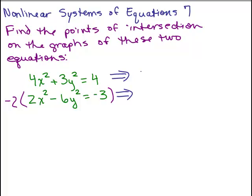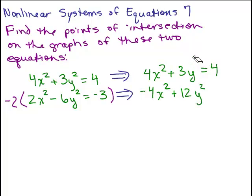I'm not going to multiply the top equation, so I'll just write it over again: 4x-squared plus 3y-squared equals 4. For the bottom equation, I've got to multiply all terms on both sides by negative 2. So this becomes negative 4x-squared, plus 12y-squared — I just noticed I accidentally wrote y-cubed, just a copying error — equals positive 6. If I add these two equations, the x-squared terms add up to 0, giving me 15y-squared equals 10.